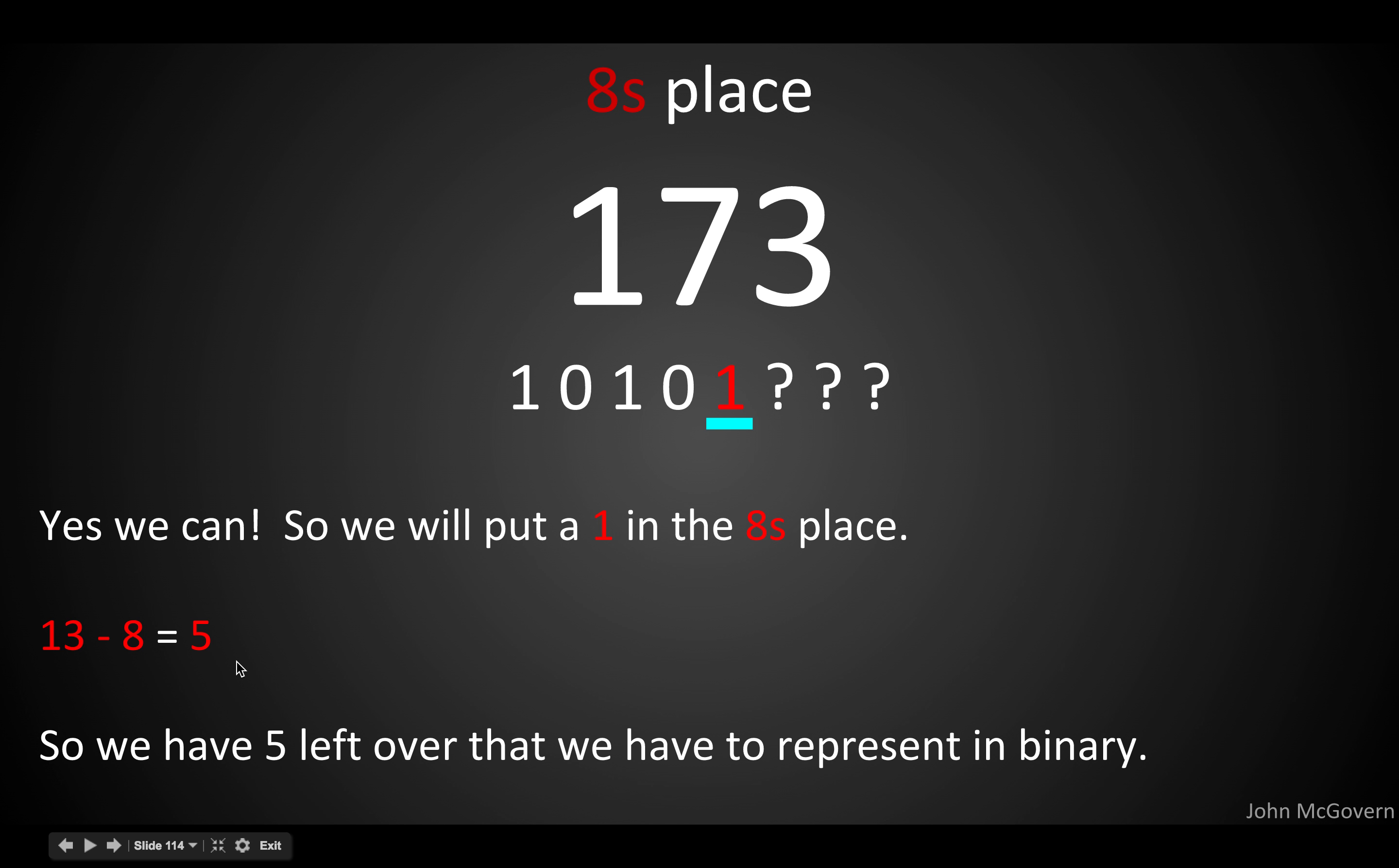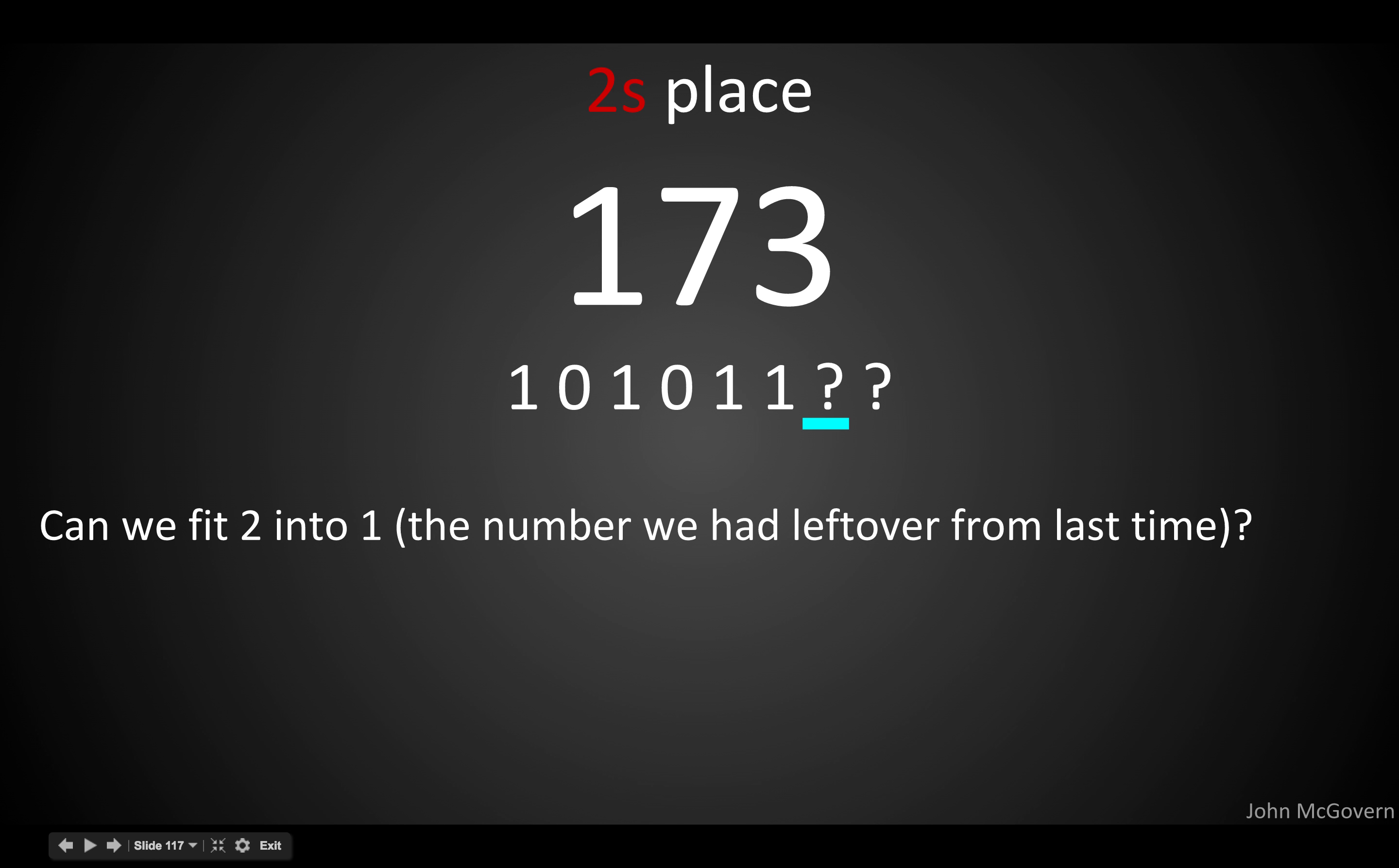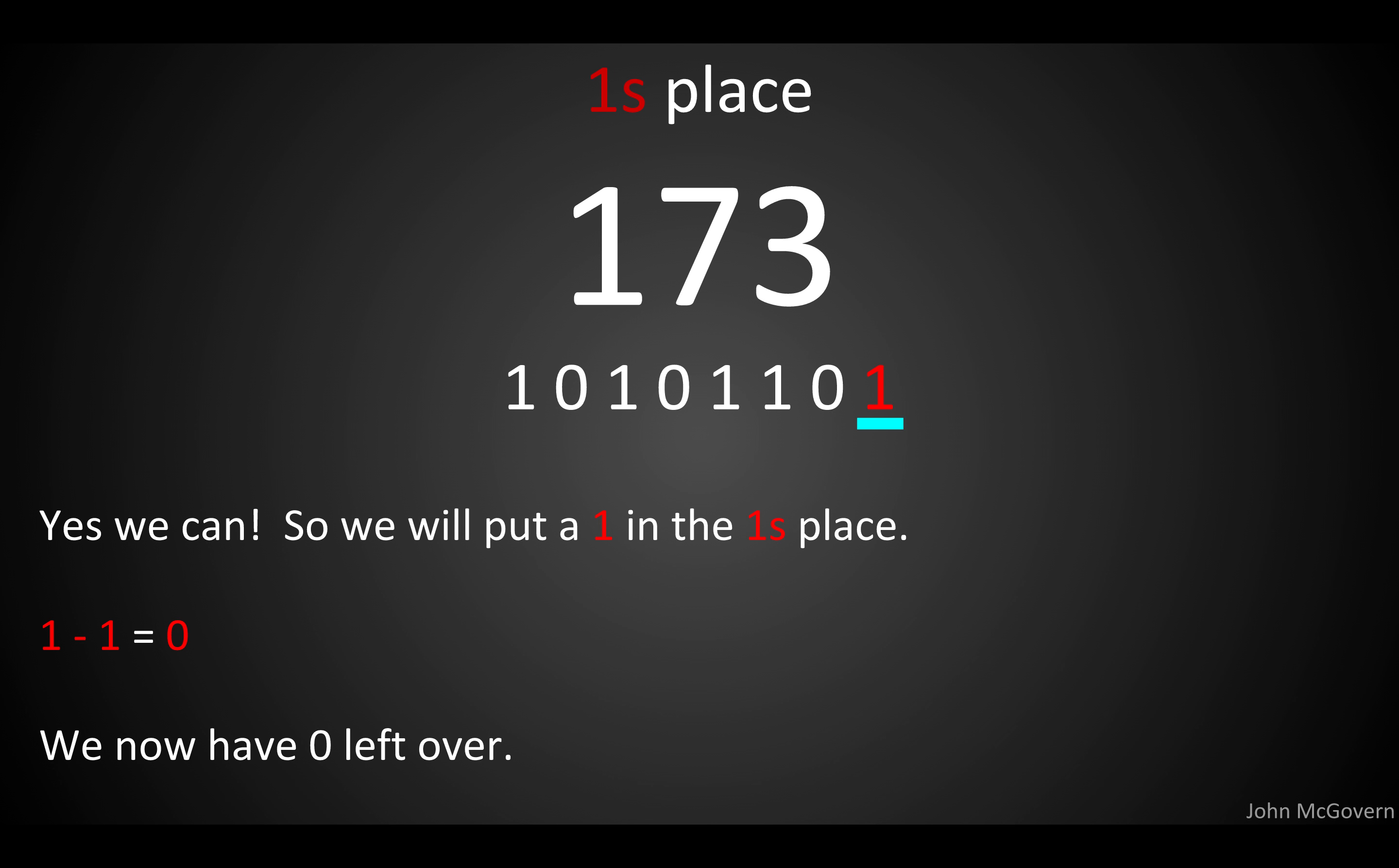And you can probably see where this is going at this point. Can we fit a 4 into 5? Yes, we can. So, 5 minus 4 is 1. 1 left over. We put a 1 in this place. To indicate that we're including a 4 here. And we have 1. The number 1. Left over to represent in binary. Can 2 fit into 1? Nope. So, we put a 0 there. And of course, finally, the 1's place. We need one more 1. So, put a 1 there. We have 1, 1 included. Now, we have a remainder of 0. And we've represented the number 173 in binary. 1, 0, 1, 0, 1, 1, 0, 0.